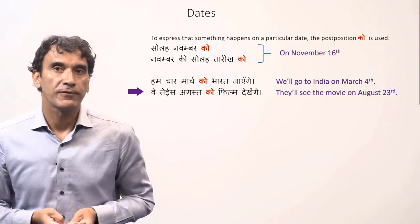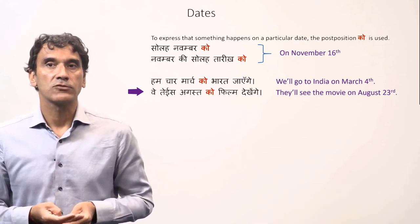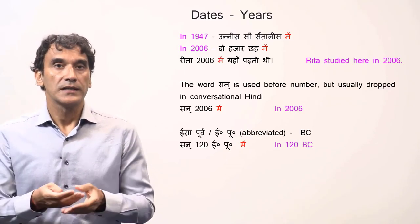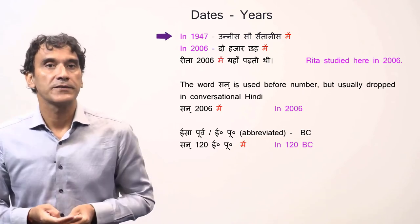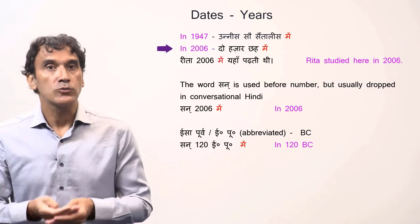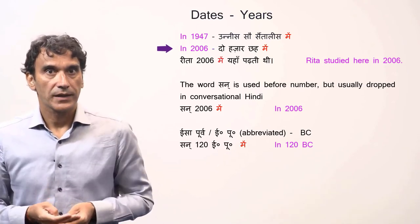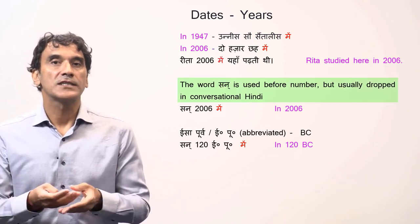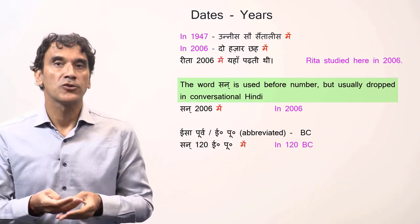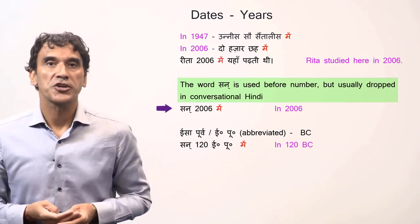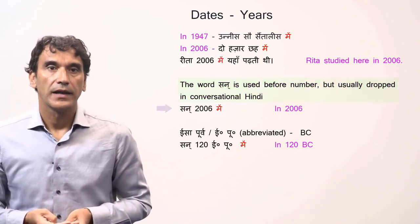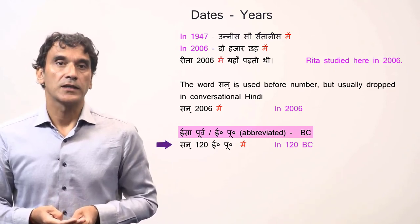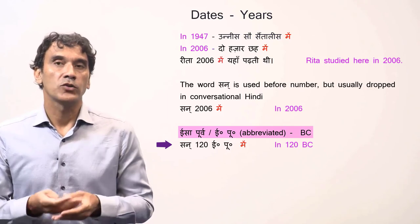Finally, years are expressed similarly to English — the postposition 'may' is used. '1947 may' means 'in 1947', '2006 may' means 'in 2006'. The word 'san' is used before the number but is usually dropped in conversational Hindi: 'san 2006 may' means 'in 2006'. For BC (Before Christ), the phrase 'isaa poorv' is used: 'san 120 isaa poorv may' means 'in 120 BC'.